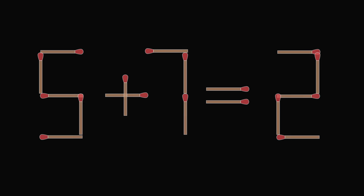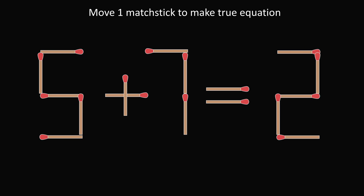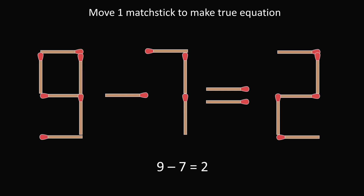Puzzle 4. We have an equation written with matchsticks: five plus seven is equal to two. The challenge is to move just one matchstick to make the equation true. There could be many ways to solve it, but here is the classic solution: take the vertical matchstick from the plus sign and add it to the five so that we make the number nine. We now have the true equation that nine minus seven is equal to two.